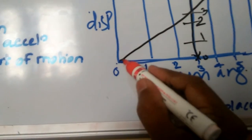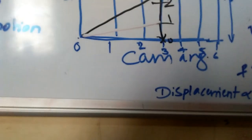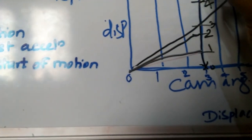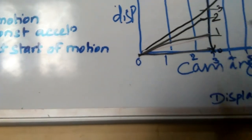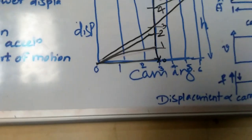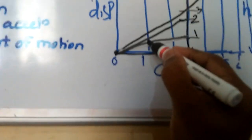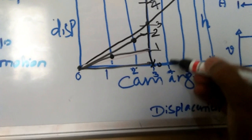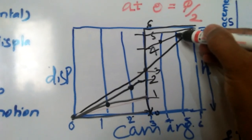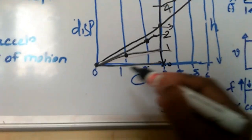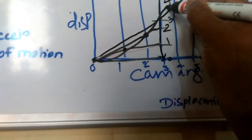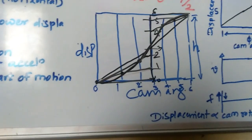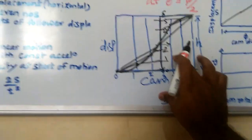Then project the points. From point 1 project to 0, from 2 project to 0. Join them horizontally at 0 and 0. Then find where vertical lines intersect the diagonal: at position 1 it intersects here, at 2 it intersects here, at 3 it intersects at the center, at 4 and 5 it intersects accordingly, and at 6 it intersects exactly at the top. Then draw the locus of all the points by projecting and joining them. This gives you the uniform acceleration and deceleration curve.